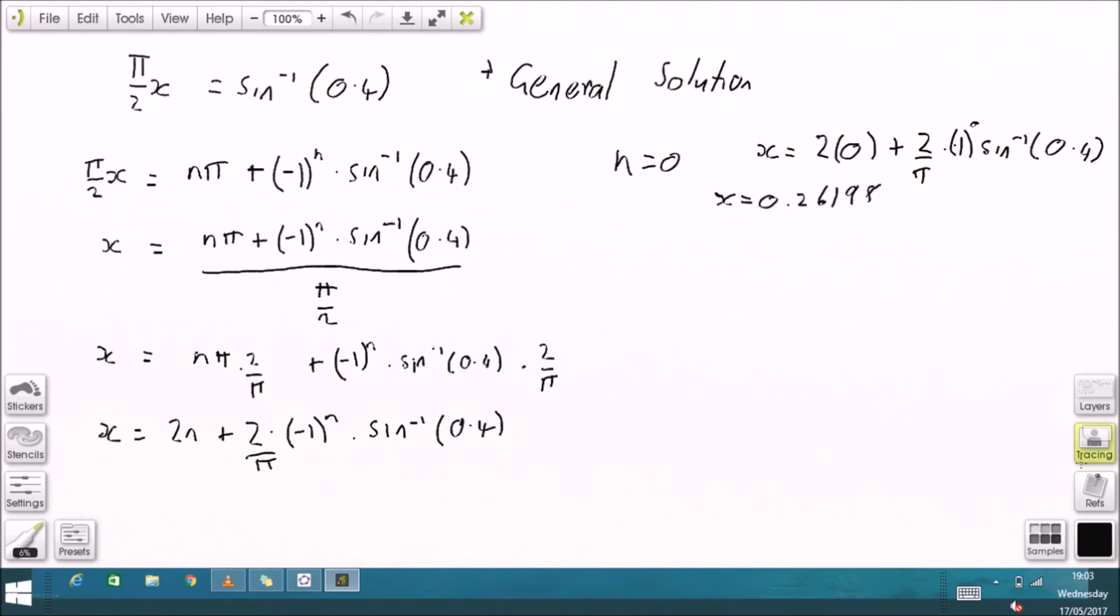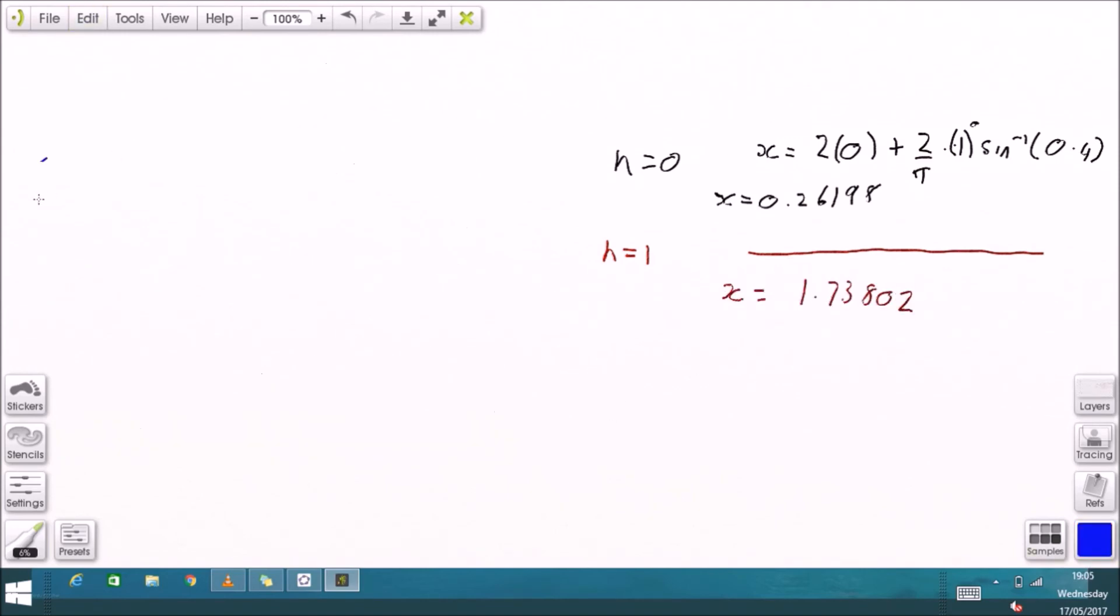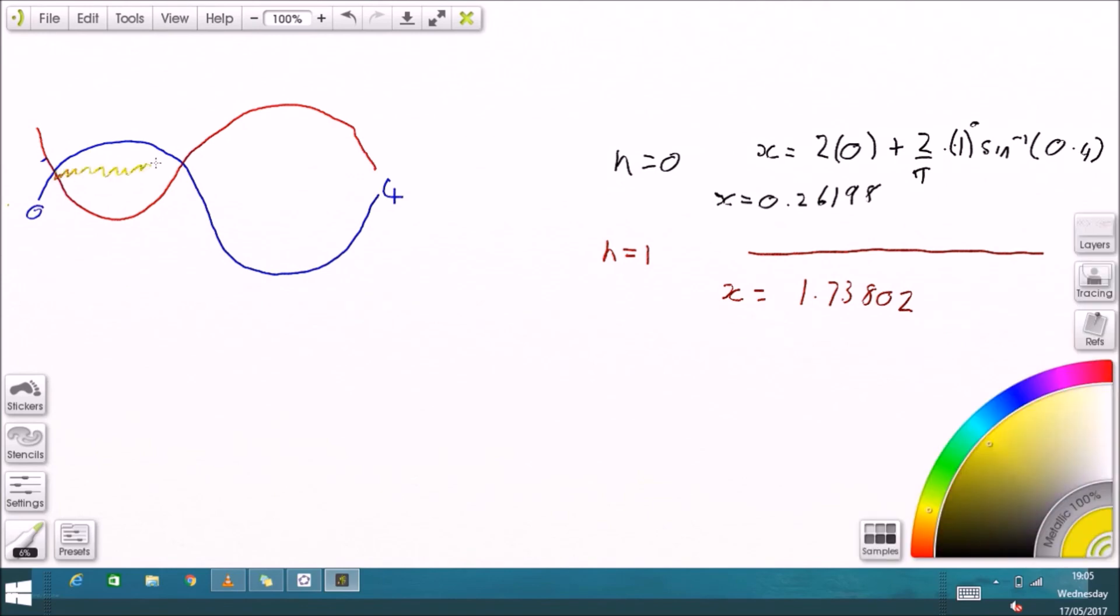And I'll do it again for n equals 1 and that will give me the next solution. That will give me x equals 1.73. So that's the two points where the red and the blue crossover in the first period.